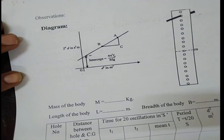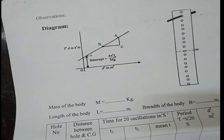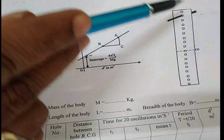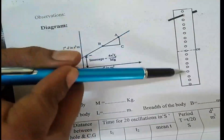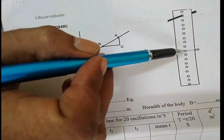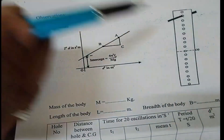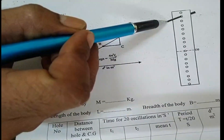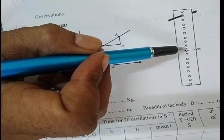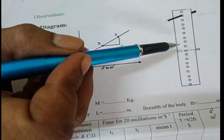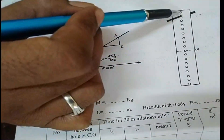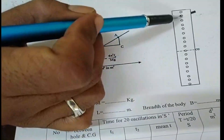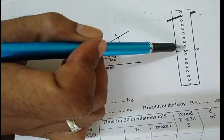Now look at the experimental arrangement. We are using a bar pendulum — a metallic bar with a certain number of holes. The central hole is considered the center of gravity (CG), and on either side we have equally spaced holes with constant spacing between them. A knife edge is inserted through each hole to find the time taken for oscillations. In this experiment, consider only one side's holes; every time insert the knife edge from the first hole, then second, third, etc., completing all one-sided holes.